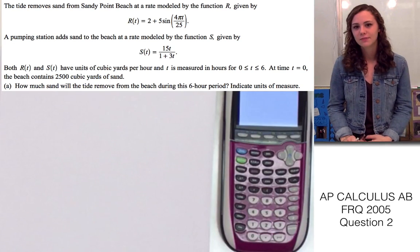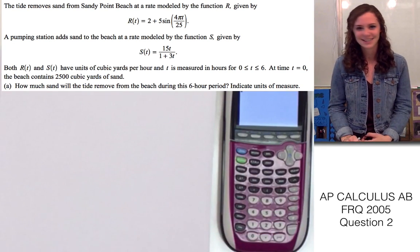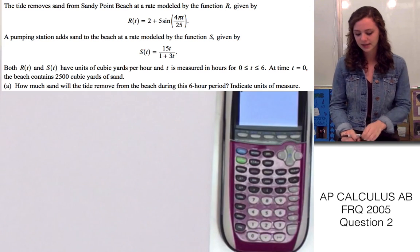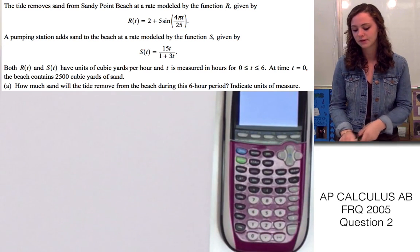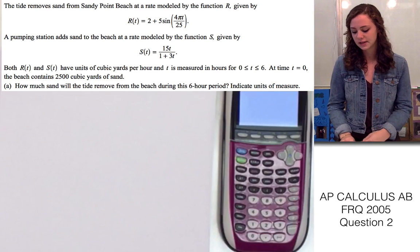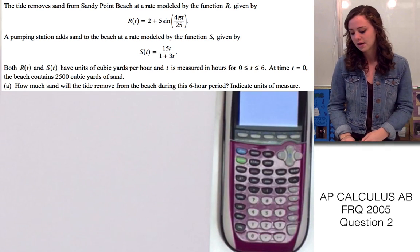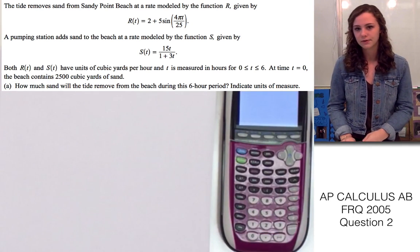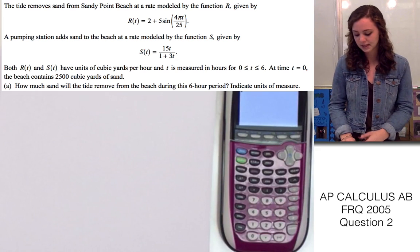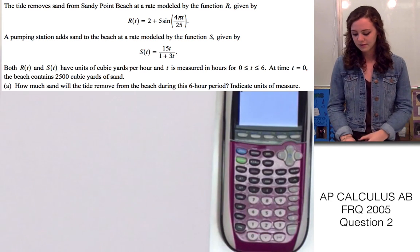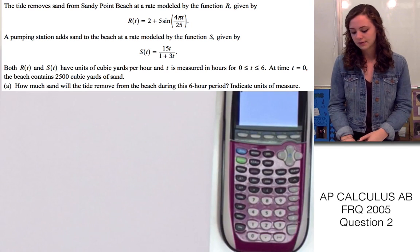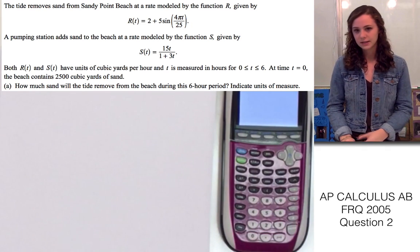I'm going to be answering a question from the 2005 AP calculus test. The question says the tide removes sand from Sandy Point Beach at a rate modeled by the function r, given r of t equals 2 plus 5 sine of 4 pi t over 25. A pumping station adds sand to the beach at a rate modeled by the function s, given by s of t equals 15t over 1 plus 3t.